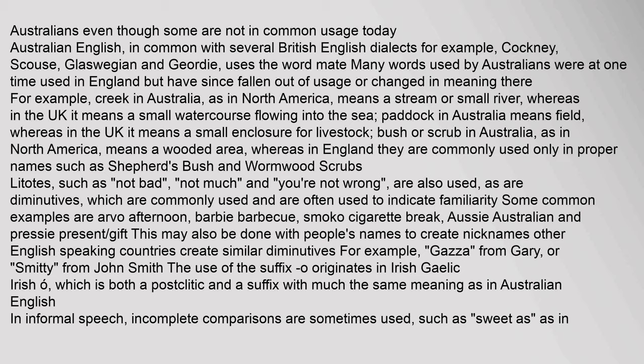Litotes such as 'Not Bad', 'Not Much', and 'You're Not Wrong' are also used, as are diminutives, which are commonly used to indicate familiarity. Some common examples are 'arvo' (afternoon), 'barbie' (barbecue), 'smoko' (cigarette break), 'Aussie' (Australian) and 'pressie' (present/gift). This may also be done with people's names to create nicknames. In informal speech, incomplete comparisons are sometimes used, such as 'sweet as', as in 'That car is sweet as.'